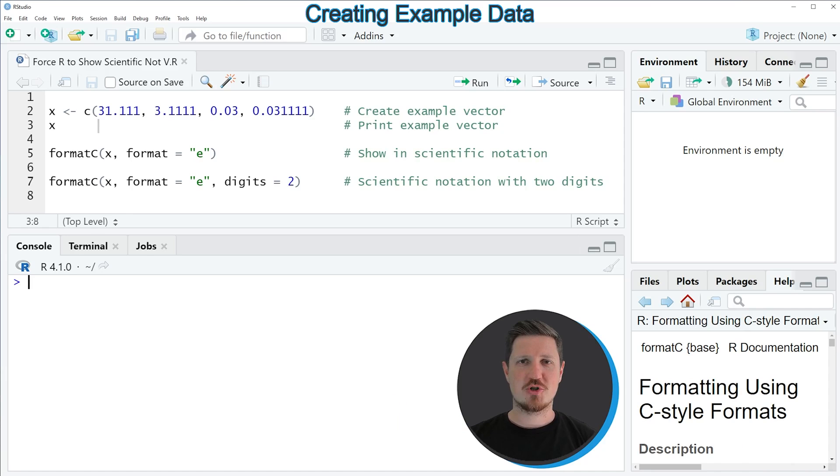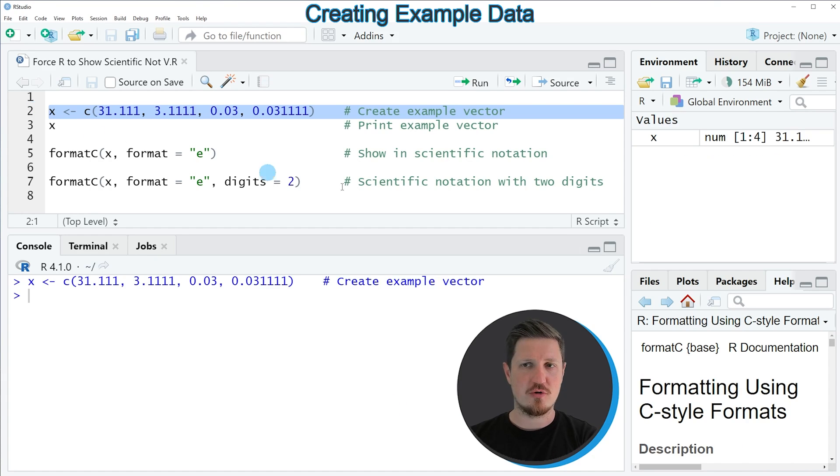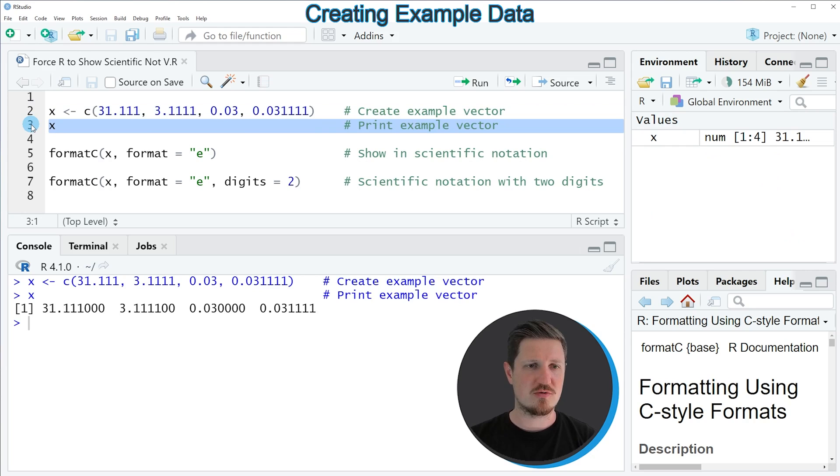In this video I will show you two examples and both of these examples are based on the example vector that we can create with line 2 of the code. So if you run this line of code, you can see at the top right of RStudio that a new vector object is appearing, which is called X. And we can print this vector to the bottom in the RStudio console by running line 3 of the code. And then you can see at the bottom that we have created a vector object containing four numeric elements.